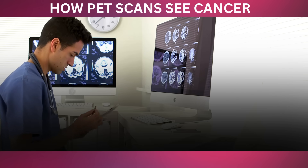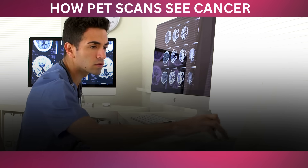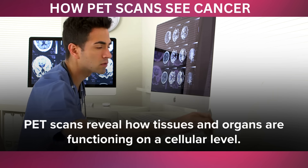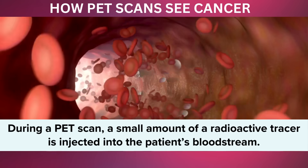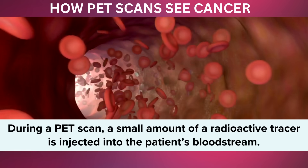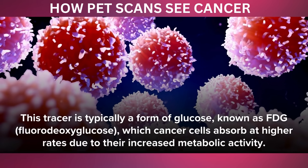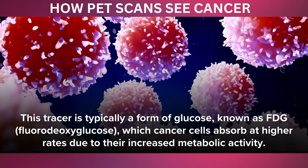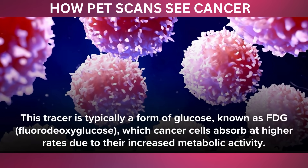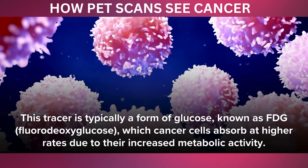Unlike traditional imaging methods that focus on the structure of organs and tissues, PET scans reveal how tissues and organs are functioning on a cellular level. During a PET scan, a small amount of a radioactive tracer is injected into the patient's bloodstream. This tracer is typically a form of glucose, known as FDG, fluorodeoxyglucose, which cancer cells absorb at higher rates due to their increased metabolic activity.